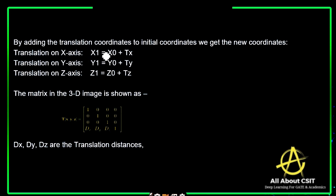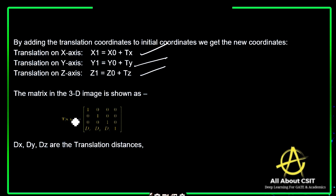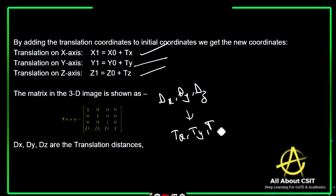By adding the translation coordinates to the initial coordinates, we get the new coordinates. The formula is: x1 = x0 + tx, y1 = y0 + ty, and z1 = z0 + tz. In matrix form for a 3D image using homogeneous coordinates, we have a 4x4 matrix where dx, dy, dz are the same as tx, ty, tz — the translation distance. Just add the initial coordinates and the shifting vector to get the new coordinates.